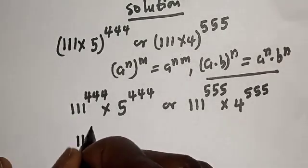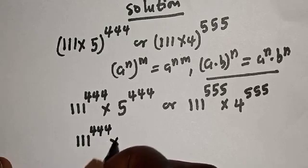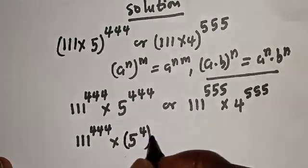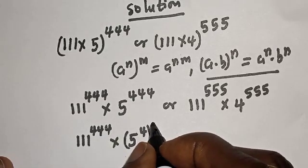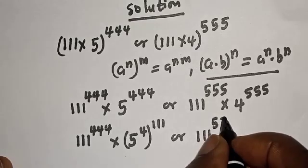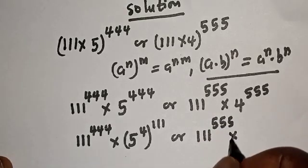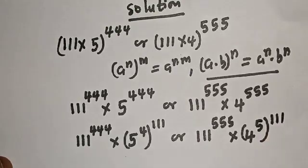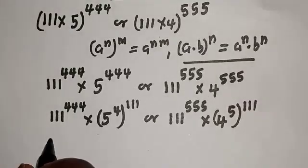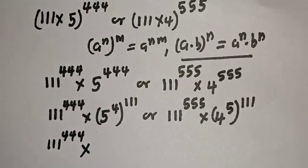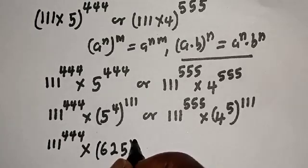This gives us 111 raised to power 444 multiplied by 5 raised to power 444. Now 444 can be written as 4 times 111, so 5 raised to power 444 becomes 5 raised to power 4, all raised to power 111. Then 5 raised to power 4 is 625, so we have 625 raised to the power 111.